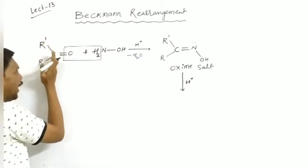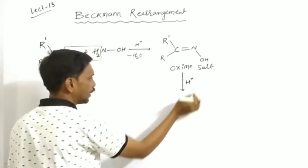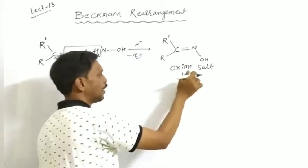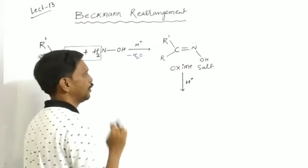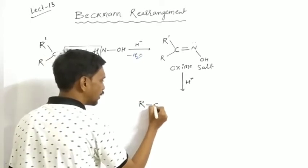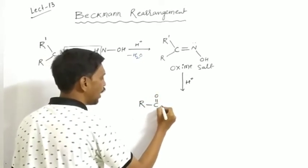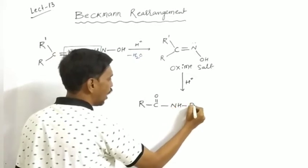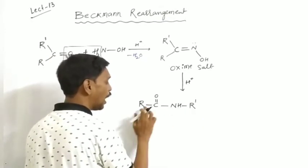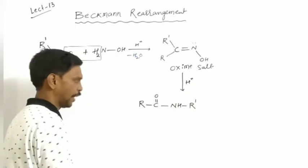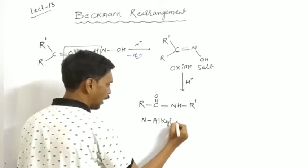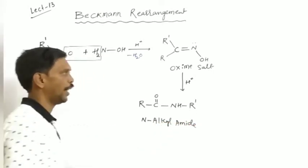This means that directly from an aldehyde or ketone, an amide is obtained via H+ or acid conditions. The oxime undergoes rearrangement in the presence of H+ to give R–C(=O)–NH–R', which is called N-alkyl amide.